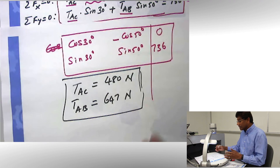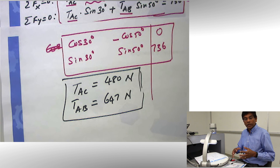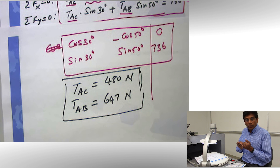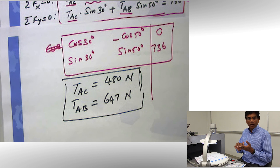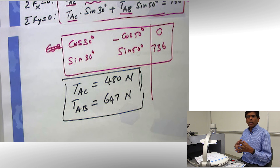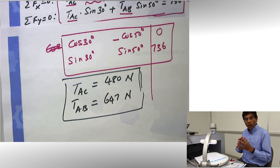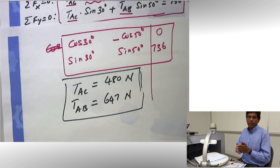That completes this problem. We have done three distinct things: we looked at a physical problem, we drew a free body diagram using a step-by-step approach, and then we used the free body diagram to write two equations and solved them. These are the three distinct stages in solving any problem involving equilibrium. I hope you will follow this approach systematically and solve problems correctly.